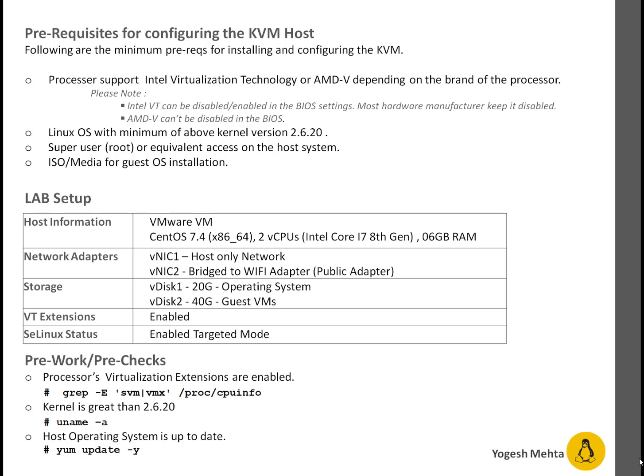For the pre-work or pre-check, you have to check whether your processor supports VT extensions or not. You can see on screen I'm grepping for 'svm' or 'vmx' depending upon your processor type. If they are enabled they will be displayed as command output. Next I'm checking the kernel version with `uname -a`. After that I'm running `yum update -y` to make sure the system is at the latest patch level from a security and features point of view. So let me quickly take you through the lab.